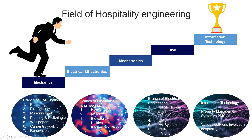Let's see how the hospitality engineering industry is connected to each stream. Branch of Mechanical Engineering: HVAC, Boiler, Elevator, Utilities, Kitchen and Laundry. Branch of Electrical Engineering: HT/LT Power, Lighting, CCTV, BMS, Audio Visual System, BGM, TV Channel. Branch of Mechatronics Engineering: all equipment categorized under both Mechanical and Electrical Engineering comes under this branch.